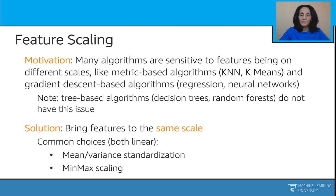As many algorithms are sensitive to features being on different scales, like metric-based algorithms such as k-nearest neighbors and k-means, or gradient-based algorithms such as linear regression or logistic regression or neural networks, bringing features to the same scale is a very popular transformer in the scikit-learn library for example. And common choices that we're going to explore next are mean-variance standardization and min-max scaling.